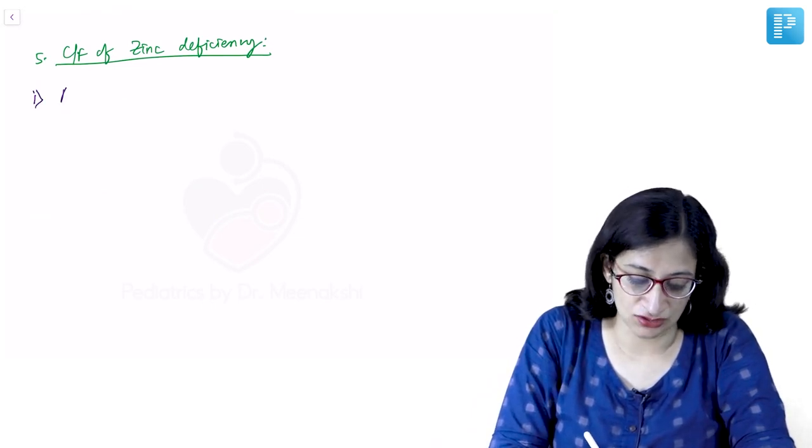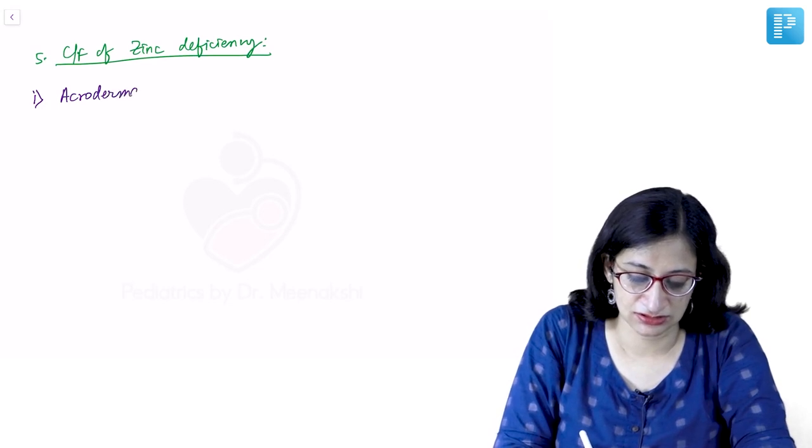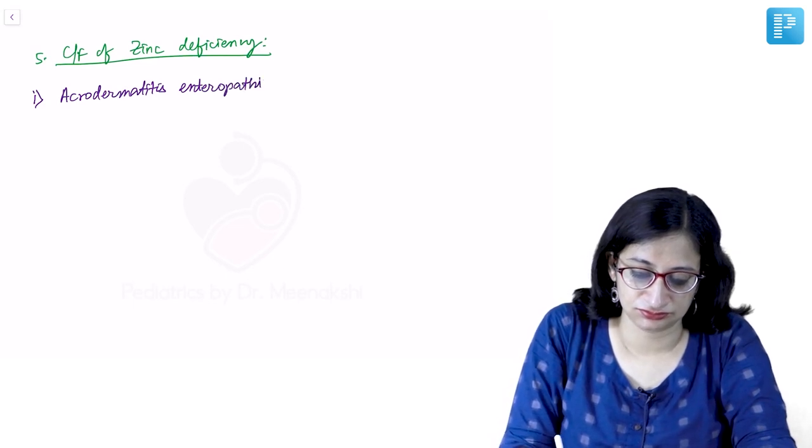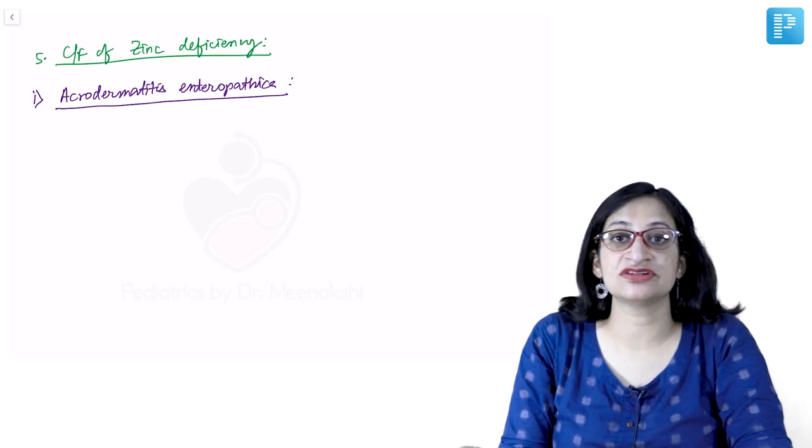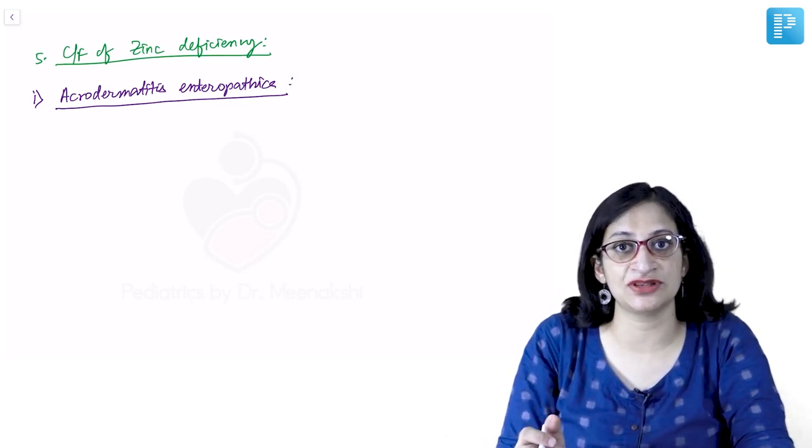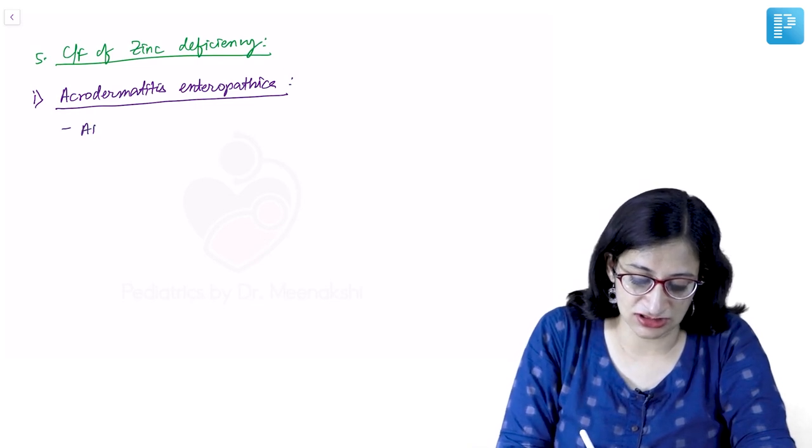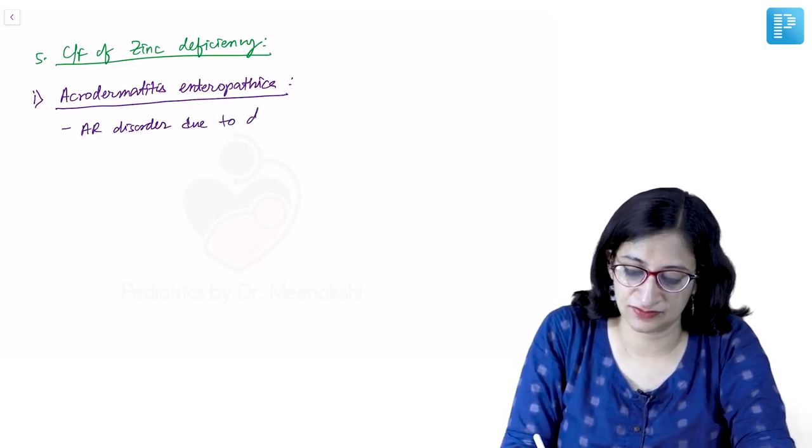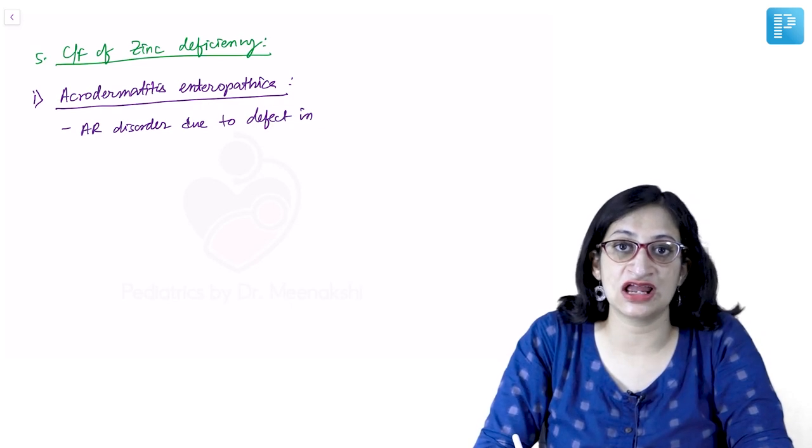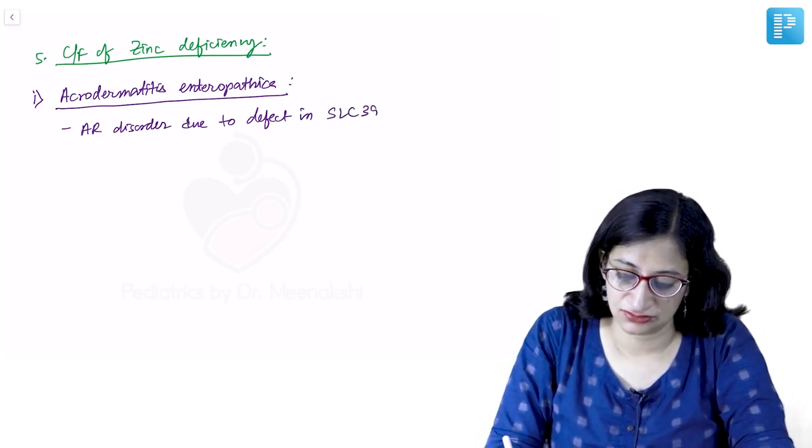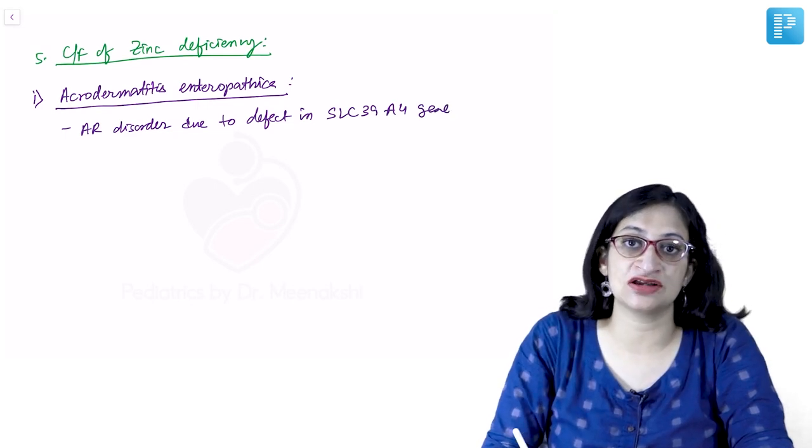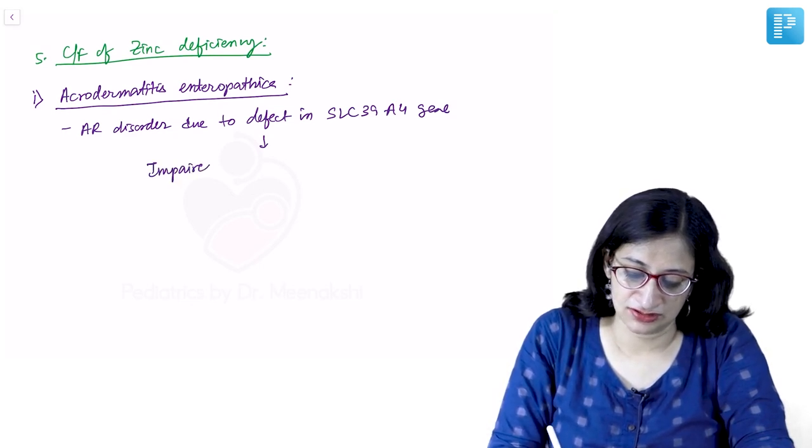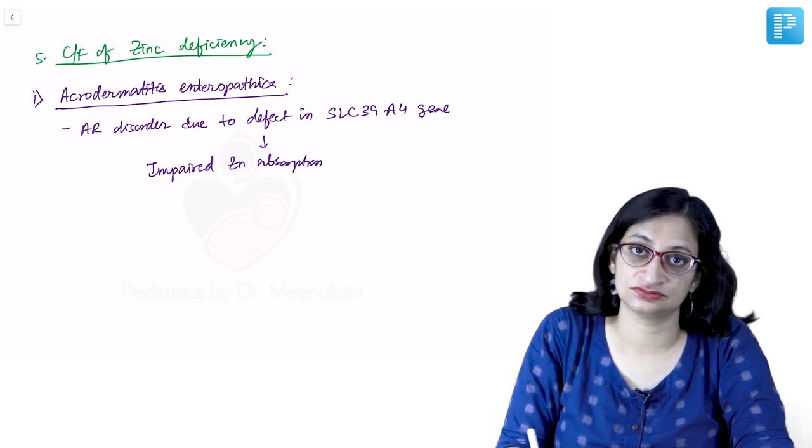So acrodermatitis enteropathica. This is basically an autosomal recessive disorder where there is impaired absorption of zinc from the intestine. So this is an autosomal recessive disorder due to defect in the SLC 39A4 gene which leads to impaired zinc absorption from intestine.